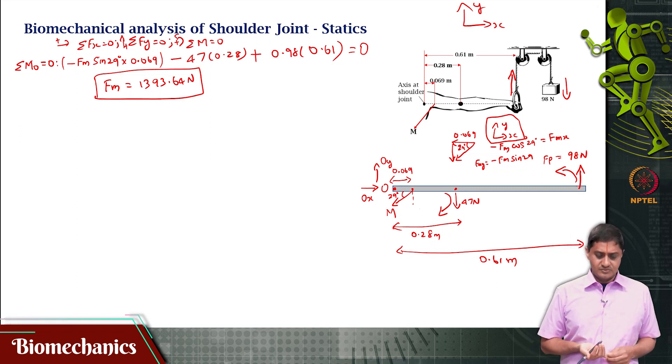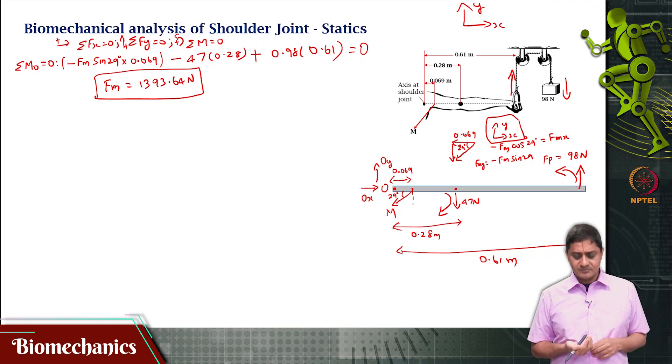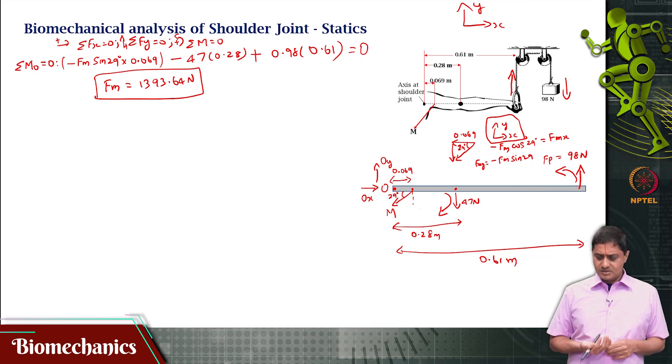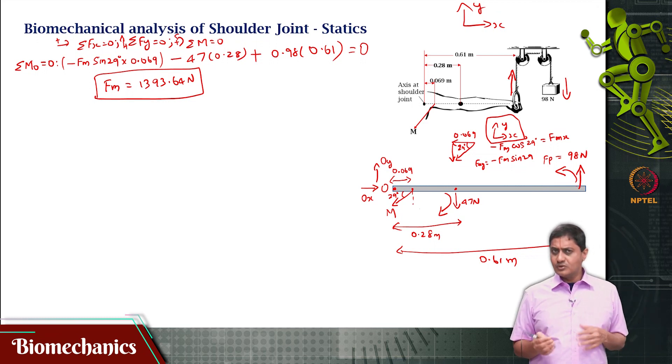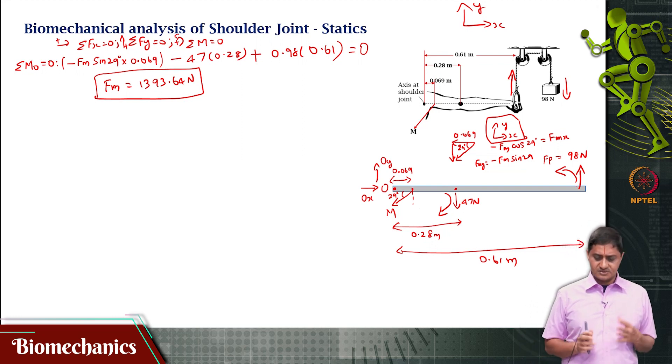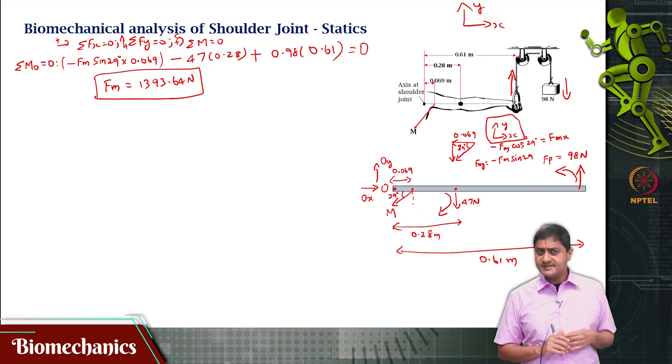Of course, you have to use your scientific calculator to do this, but you find this to be a very large number. Let us look at the load that will have to be overcome that is 98 newtons, the muscle force is about 14 times as much. 1394 newtons, that is a lot of newtons. Why is this happening?